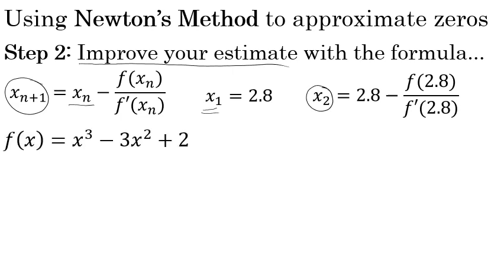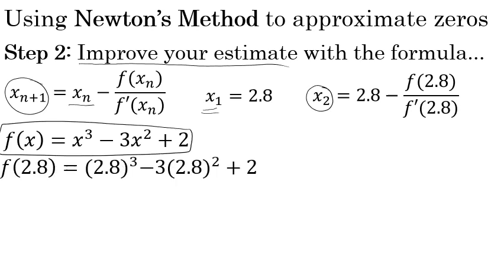Let's recall that the function we're trying to estimate the zero of was f of x equals x to the third minus 3x squared plus 2. And first evaluating f of 2.8, we'll substitute a value of 2.8 for each occurrence of x in this function, and that yields about 0.432.